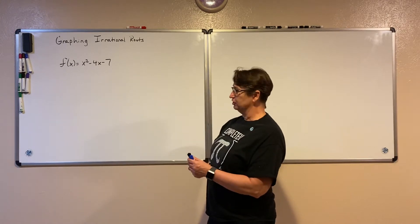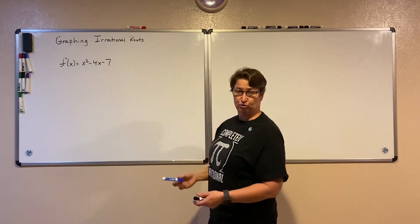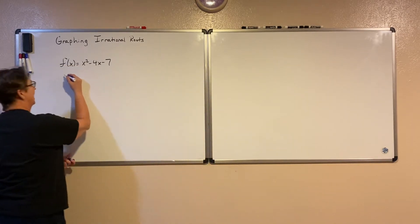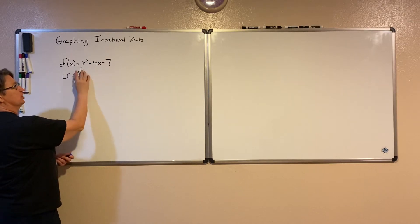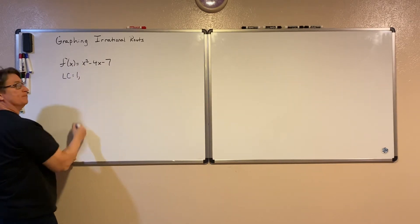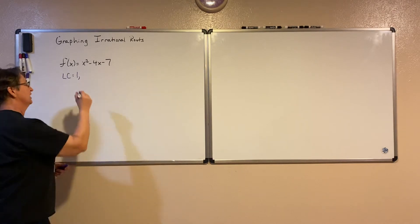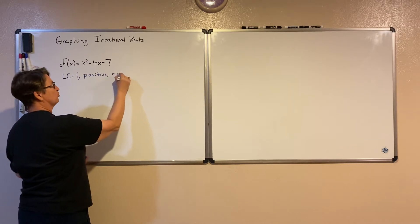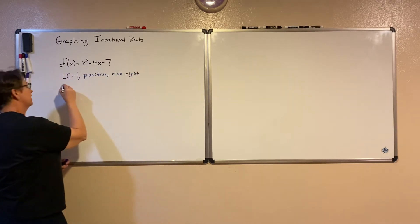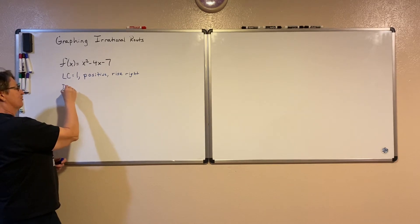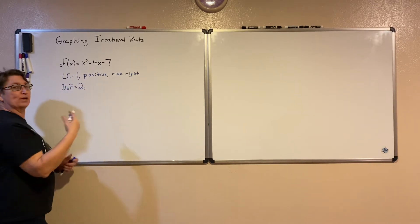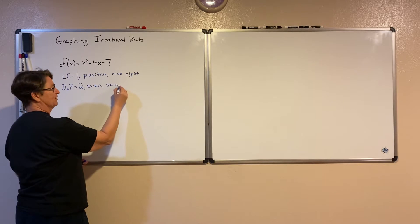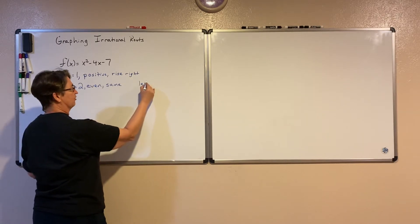This quadratic function — the way we're going to begin is as we do with all of our polynomials, by looking at the end behavior. Our end behavior: the first thing we look at is the leading coefficient. Our leading coefficient here is 1. What we care about is that it is positive. The positivity tells me that on the right, it is going to rise. The degree of the polynomial is 2, and what we care about is that it is even. That evenness tells me it's going to be the same on the left as it is on the right.